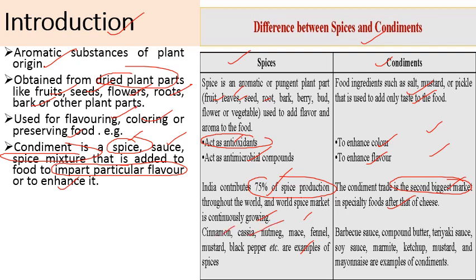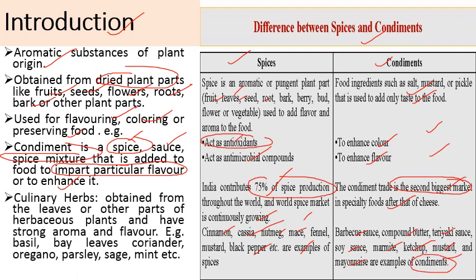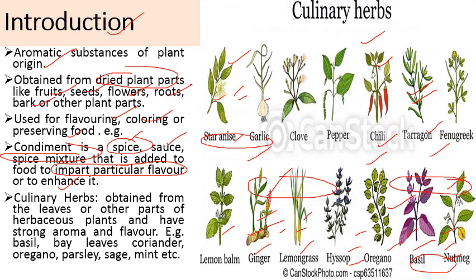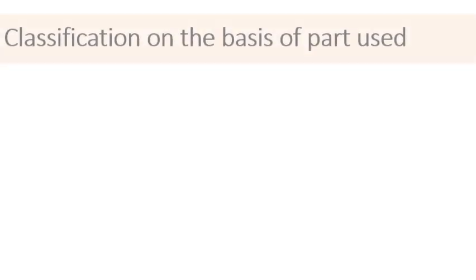Examples of spices include cinnamon, cassia, nutmeg, mace, fennel, mustard, and black pepper. Condiments include barbecue sauce, compound butter, teriyaki sauce, soy sauce, marmite, ketchup, mustard, and mayonnaise. Next come culinary herbs, which are obtained from leaves or other parts of herbaceous plants and have a strong aroma and unique flavor. Examples include basil, bay leaves, coriander, oregano, parsley, sage, and mint. These all are known as culinary herbs with specific aromatic substances that impart special aroma and flavor to food.